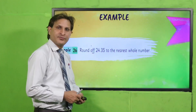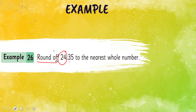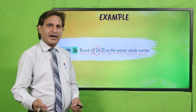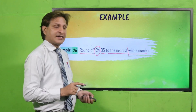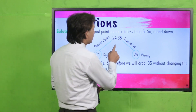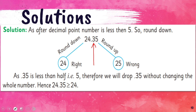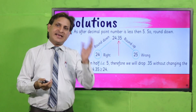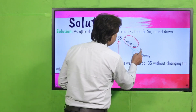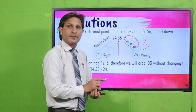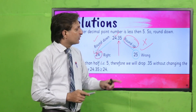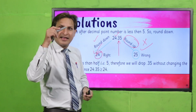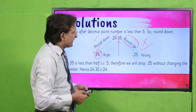अब next example: Round off 24.352 to the nearest whole number। Condition यह है कि whole number पर round off करना है। तो कैसे करेंगे? यह जो number है 3 — decimal point के बाद — इसको देखेंगे। यह अगर 5 है या 5 से greater है तो round up कर देंगे। अगर 5 से less है तो round down कर देंगे। अगर round up किया तो 25 बन जाएगा। अगर round down किया तो 24 ही रहेगा। So 24 correct है — क्योंकि जो point के बाद digit है वो 3 है, जो less than 5 है।